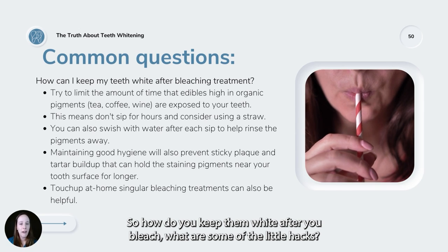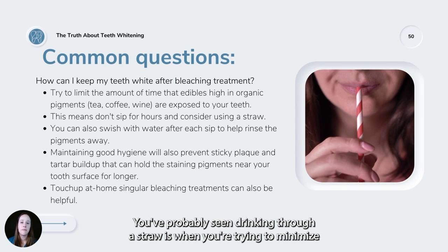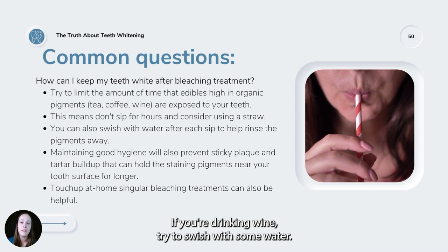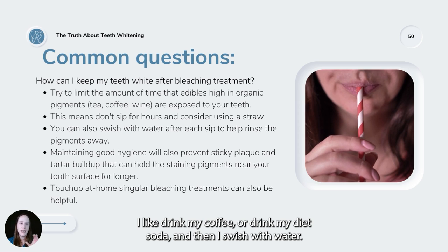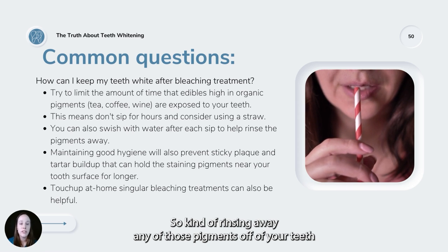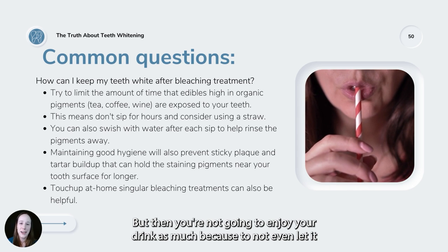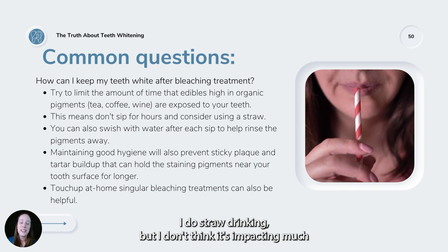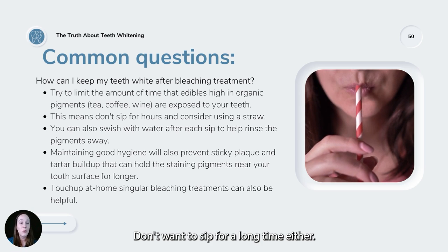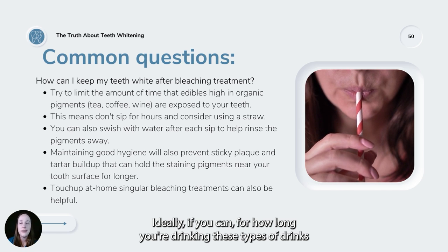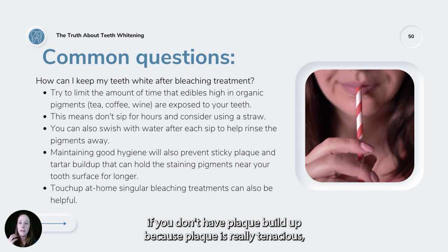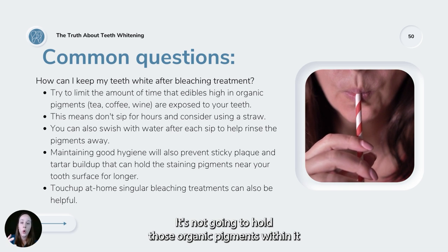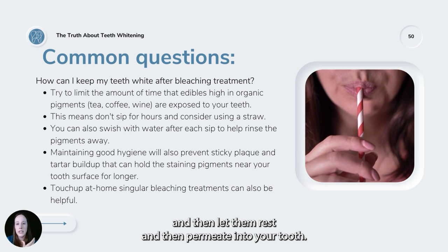How do you keep teeth white after bleaching? Drink through a straw to minimize contact of tannin-containing beverages with teeth. Rinse with water afterward — I do that with my coffee and diet soda. Try to minimize the duration of sipping these drinks. Good hygiene also helps: plaque is sticky and holds organic pigments, allowing them to permeate into the tooth, so brushing and flossing keeps that from building up. If you have custom trays or use white strips for touch-ups once a year, professional whitening with good maintenance can last one to three years.